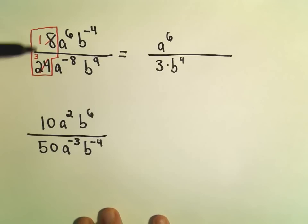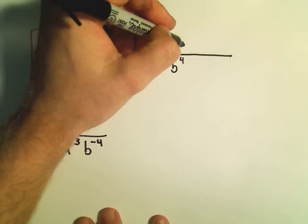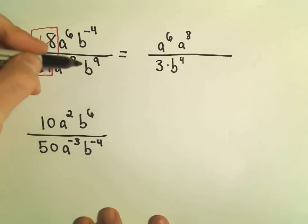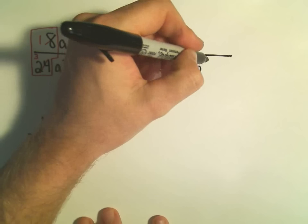Now I go to the denominator. We've already dealt with the numerical part of it. I have a to the negative 8, so I'm going to put it to the top of the fraction and make it a to the positive 8. And in the denominator, we had a b to the 9th power. Since it was already positive, I'm just going to leave it in the bottom.